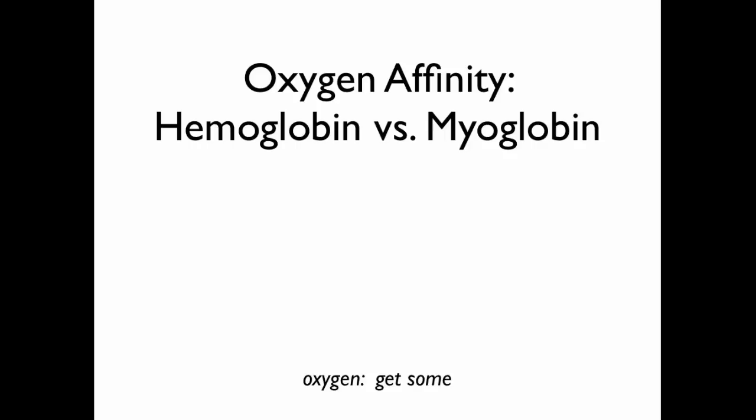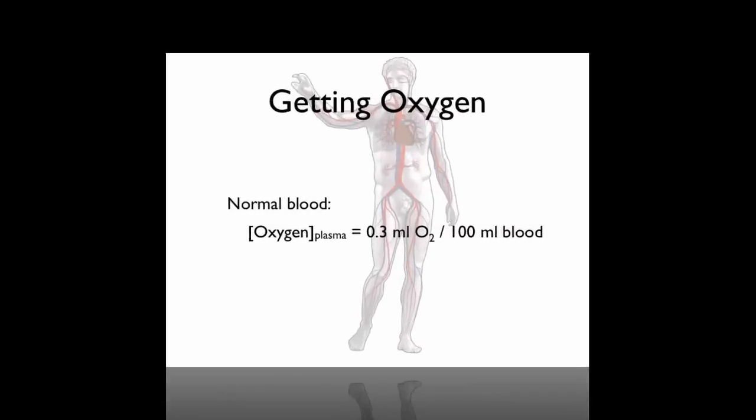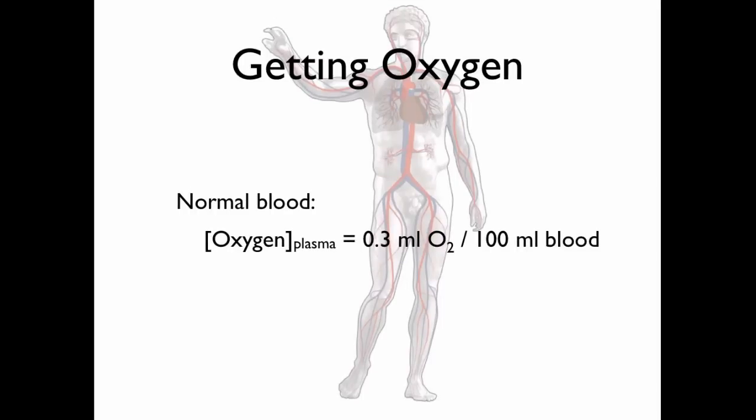Today, as you can see, we're going to talk about hemoglobin and myoglobin and how to get some oxygen. Problem is, there's not much oxygen dissolved in blood plasma, about three-tenths of a mil of oxygen per 100 cc's of blood.